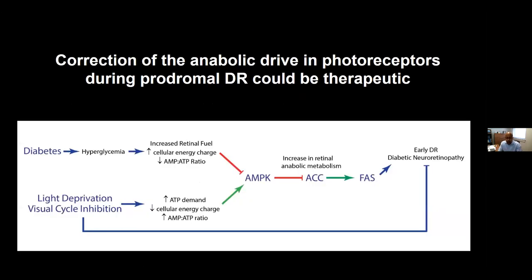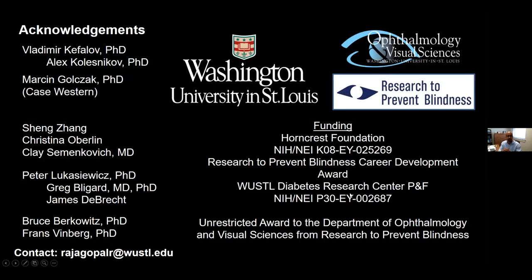I propose the hypothesis that this abnormal neurovascular coupling is a direct consequence of the abnormal photoreceptor metabolism pathways I've outlined today. In summary, our model is that elevated anabolic signaling — reduced AMPK activity — drives fatty acid synthesis and abnormal anabolism leading to pathology, and that non-pharmacologic interventions like light deprivation, or novel pharmacotherapy directed at this pathway, could be therapeutic. I'd like to thank my collaborators, specifically Vladimir and Sasha, and our collaborators at Washington University.